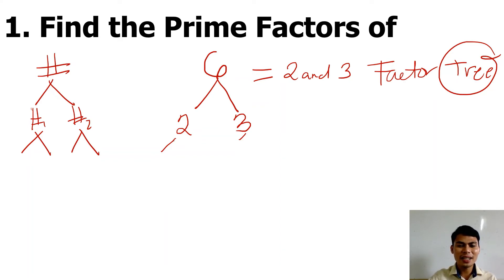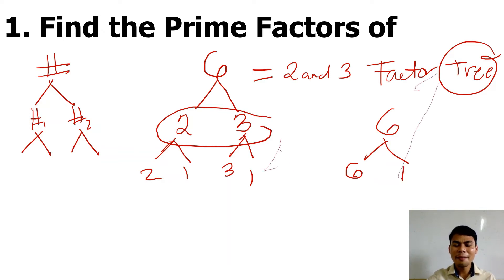You might say, sir, 2 is 2 times 1. But I said you stop if they're already prime numbers. Stop there, these are the prime numbers. You might also say, sir, isn't 6 also 6 times 1? Yes, it could be 6 times 1, but can't 6 be broken down into more factors? It can, sir, 3 times 2. So don't start with 1 and itself. Don't use 1 and itself, just go directly to the factors.